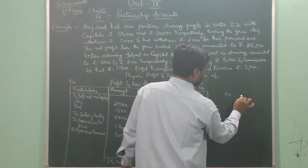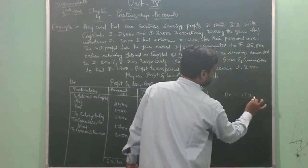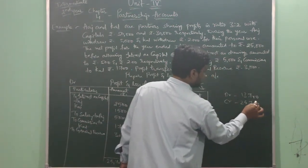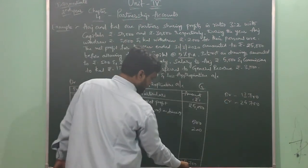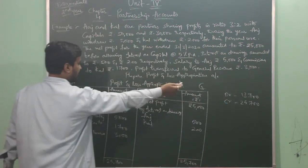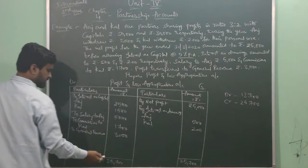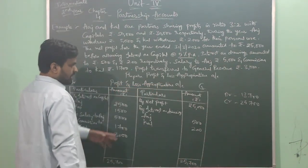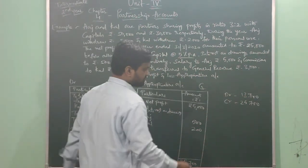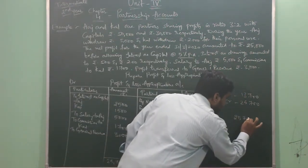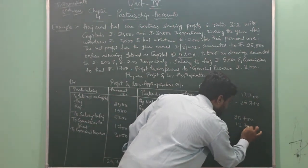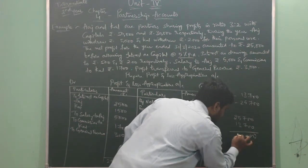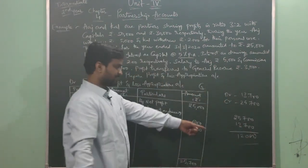So let us put the totals. Debit side total is 13,700 and credit side total is 25,700. The highest amount is 25,700, written on both sides of the Profit and Loss Appropriation Account. Subtracting the smaller from the larger: 25,700 minus 13,700 = 12,000. So rupees 12,000 are left, which is the profit to be distributed among the partners.